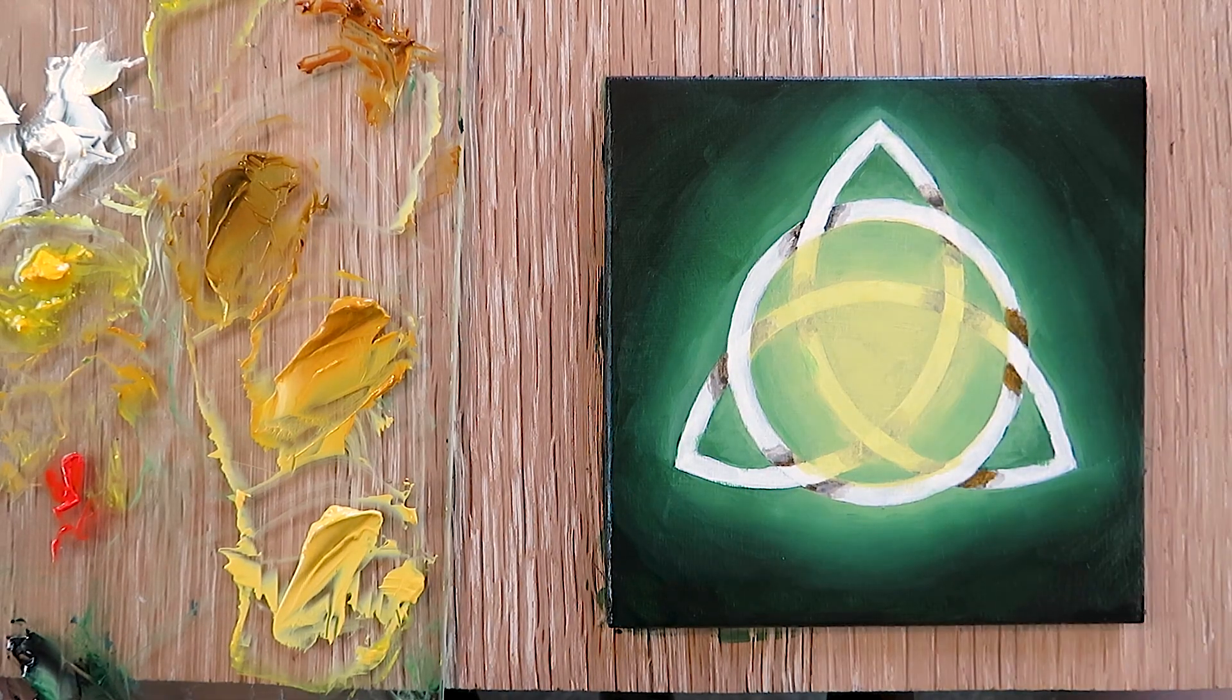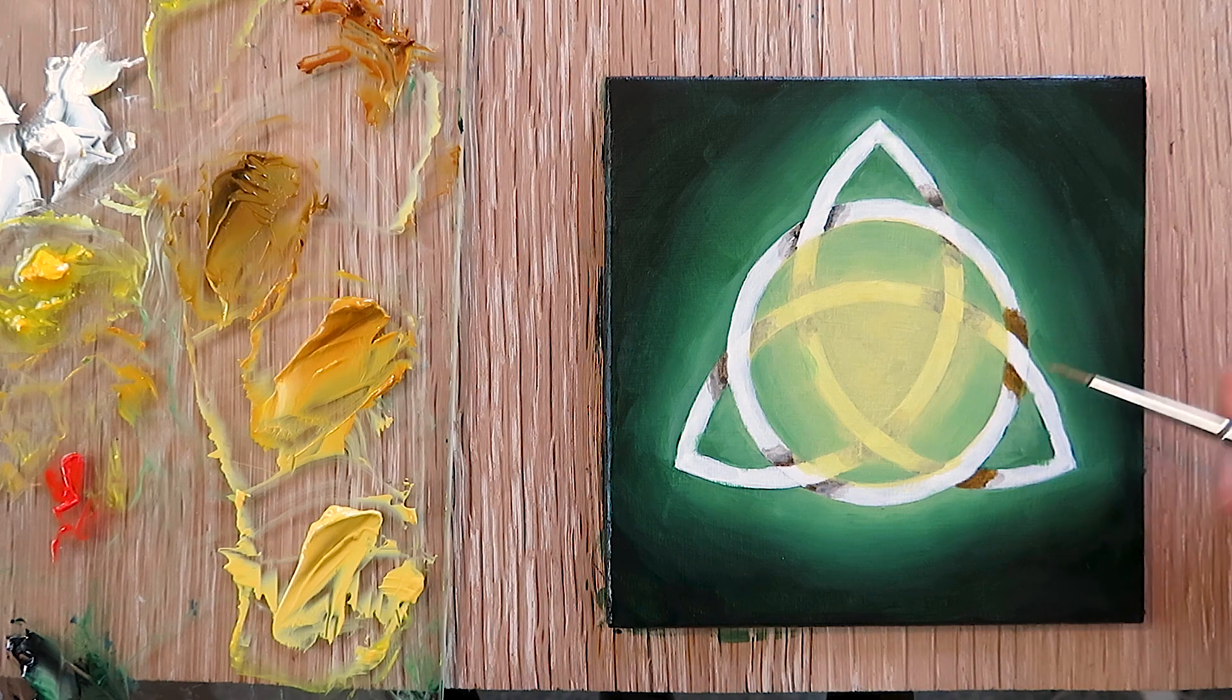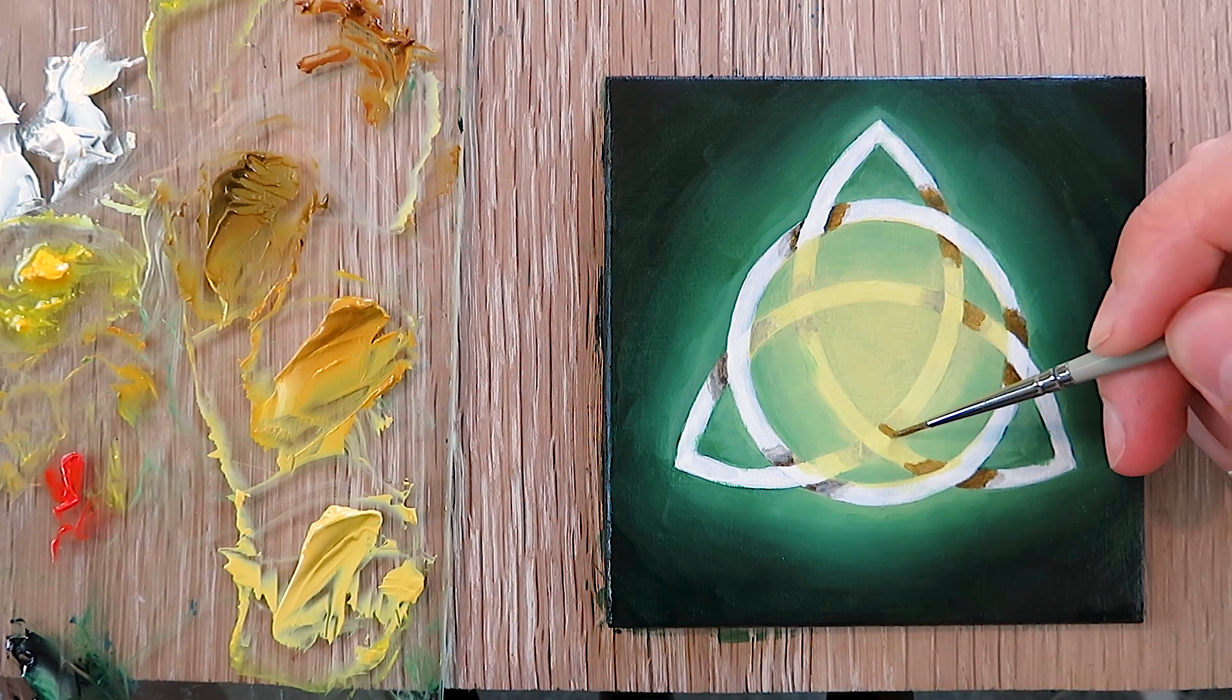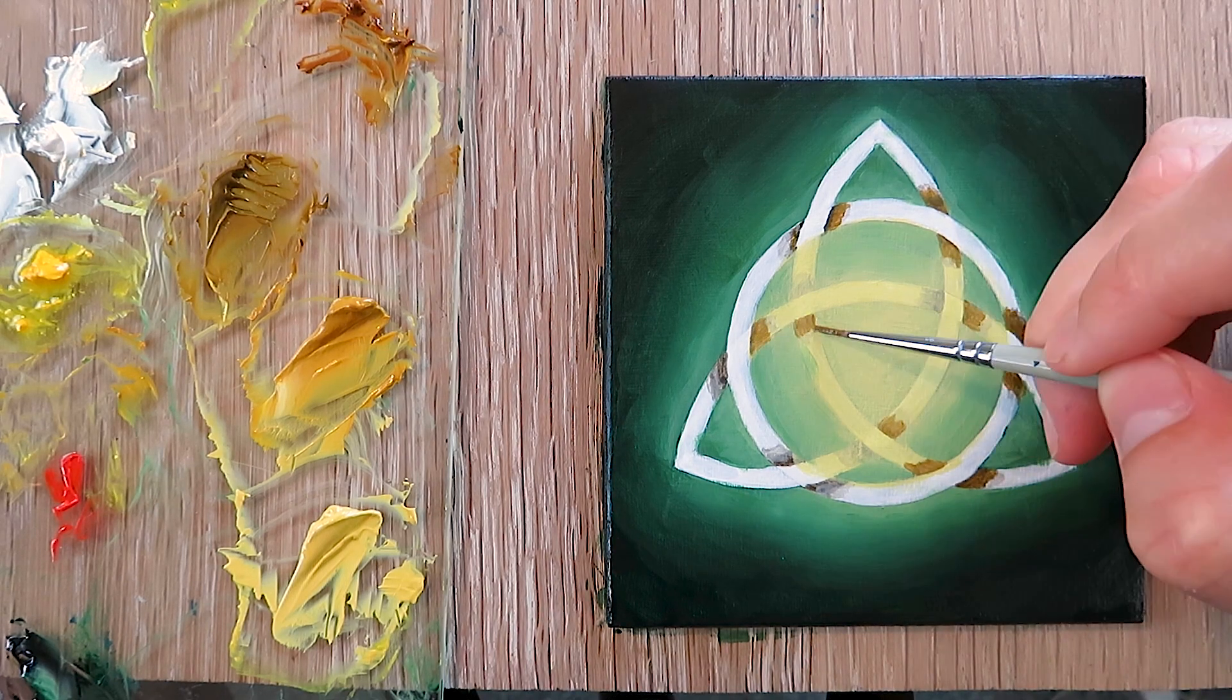For painting the trinity knot, we use a small round brush or very small flat brush and a tiny brush. We start with the shadow color and paint the areas where the lines cross each other.